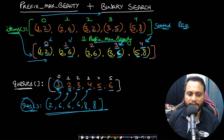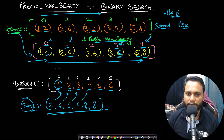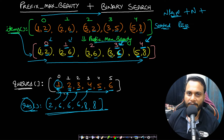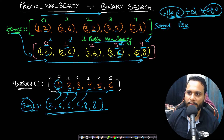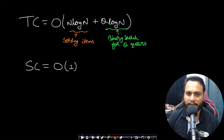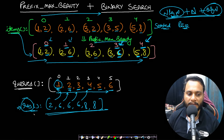For complexity: sorting the items array of length n takes O(n log n). Calculating the prefix max beauty by one left-to-right pass is O(n). For each of the q queries, binary search takes O(log n), so q queries take O(q log n). The overall time complexity is O(n log n + q log n). Space complexity is O(1), considering sorting is done in-place and we don't count the result array as extra space.